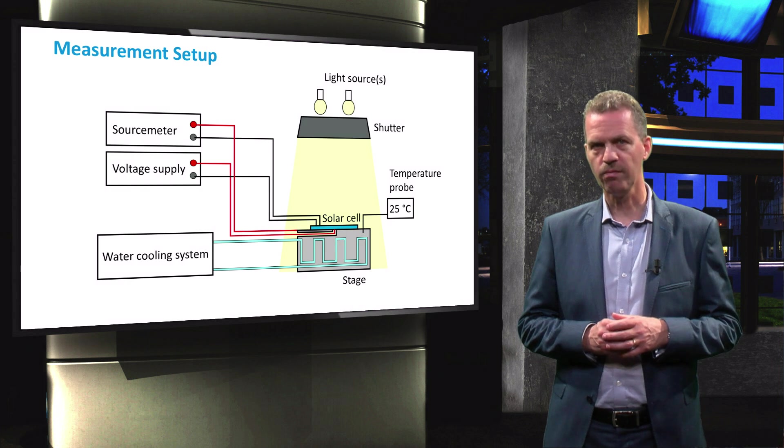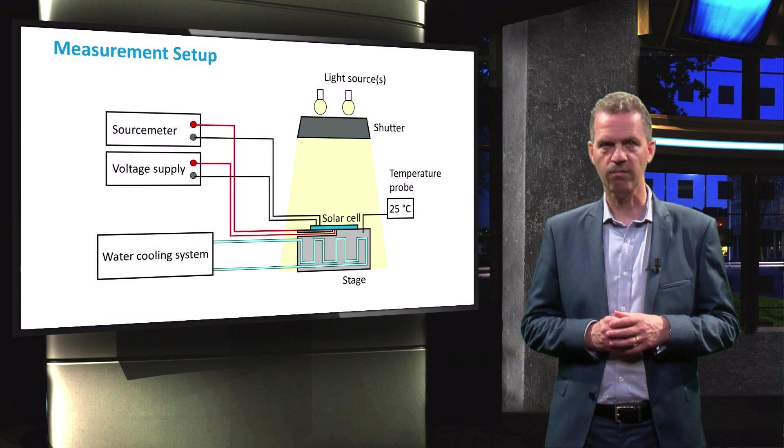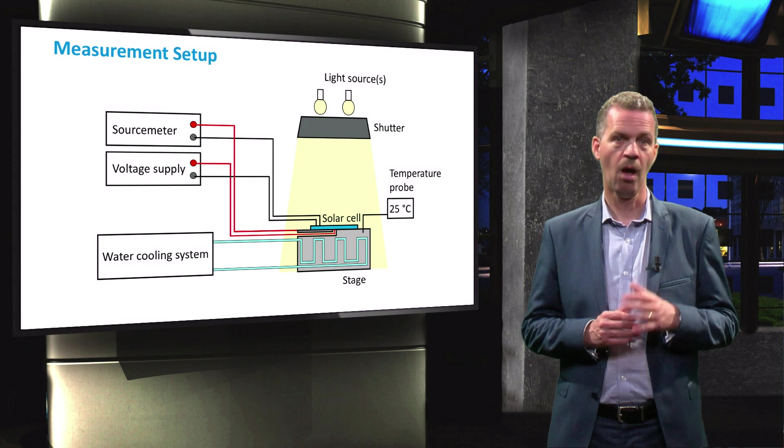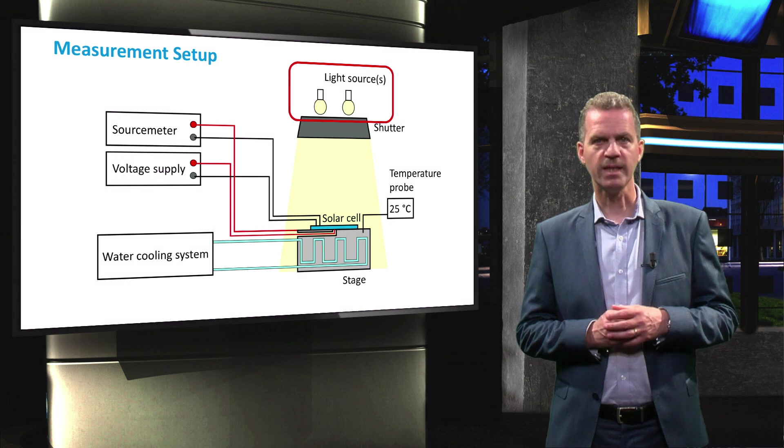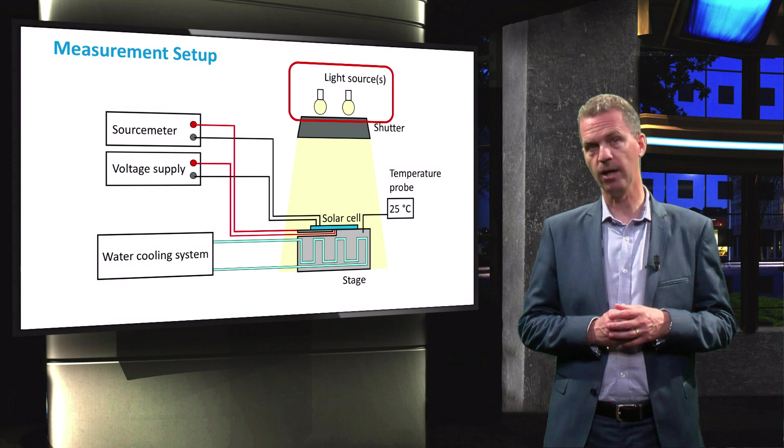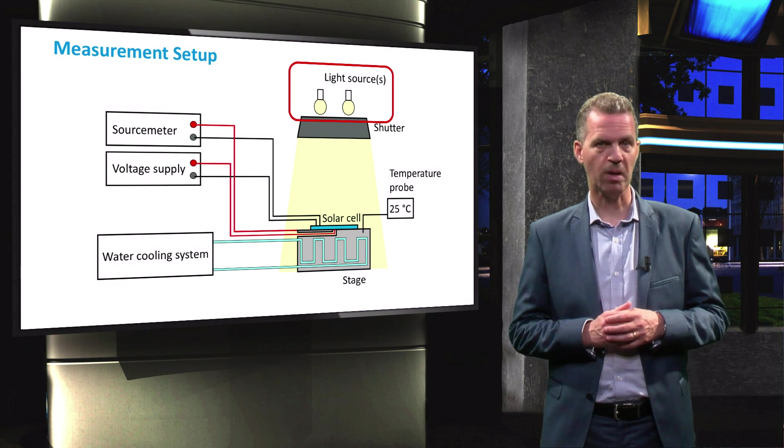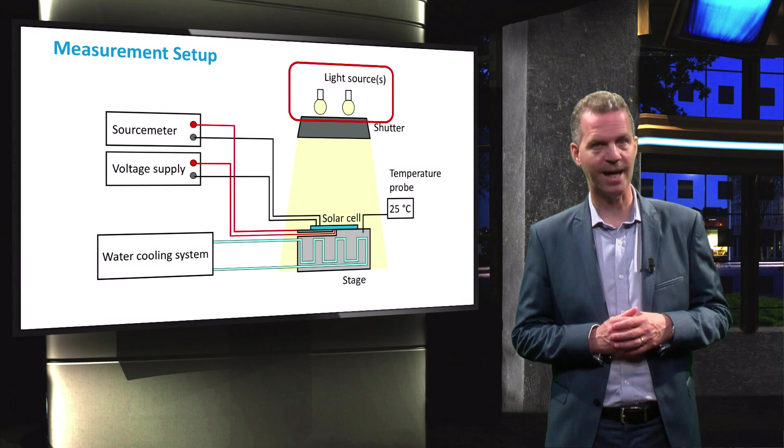This diagram shows an overview of a typical illuminated JV curve measurement system. First of all, it requires a single light source or combination of multiple light sources to simulate the spectral intensity of the sunlight accurately.